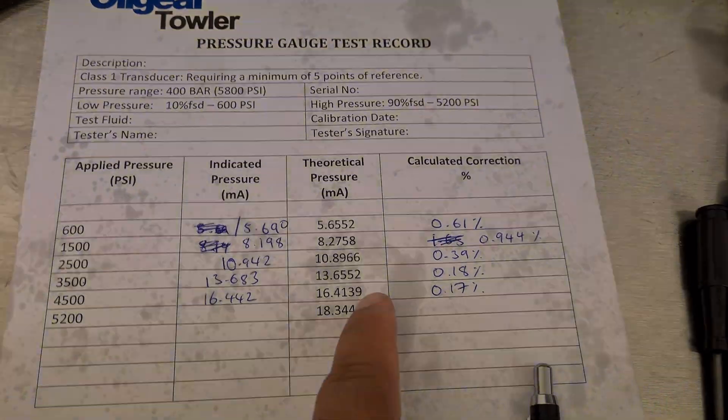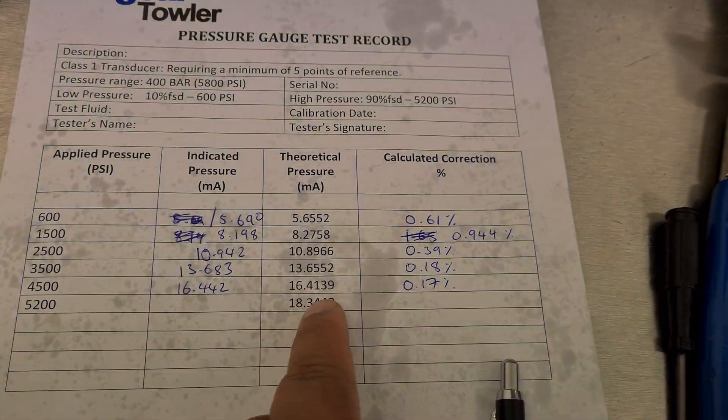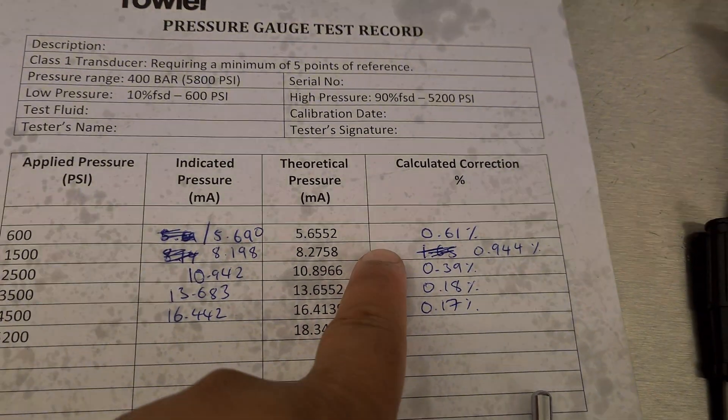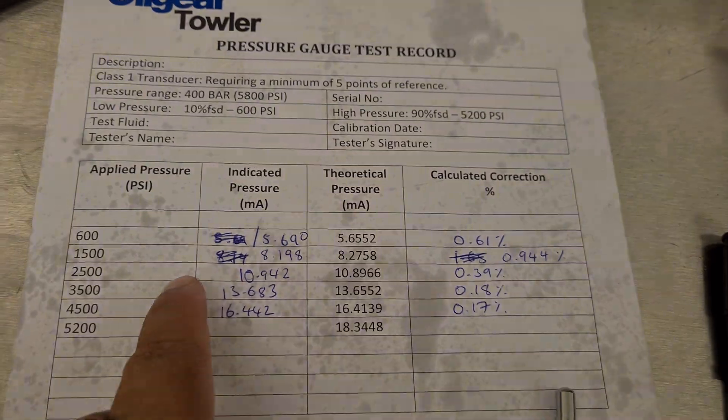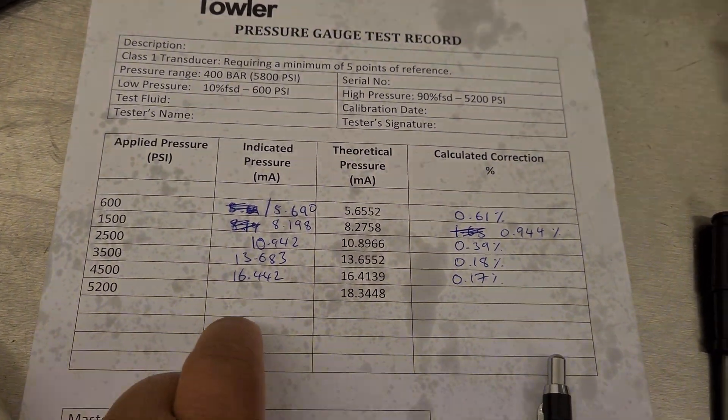So it's within spec because it needs to be within one percent to what is expected. So this transducer here is all good. It's a bit more out on the lower end, but we use it from like 4,200 psi upwards.